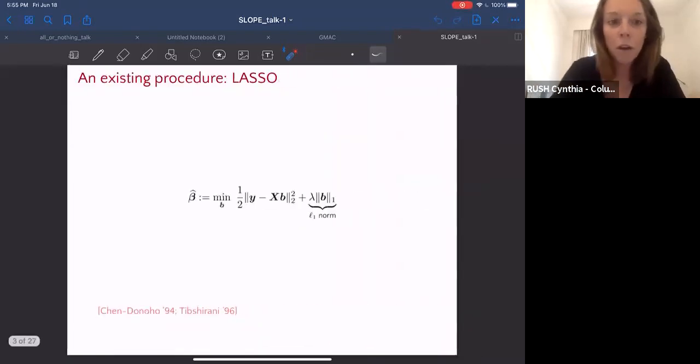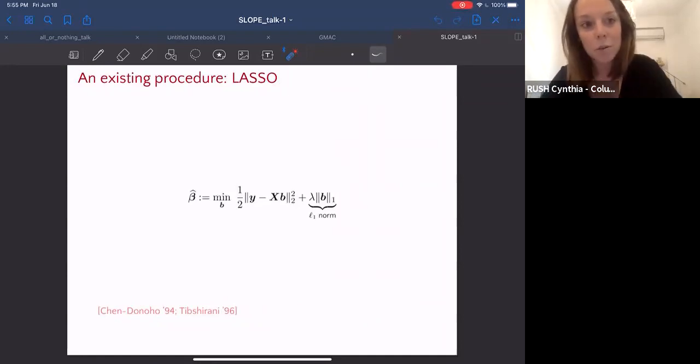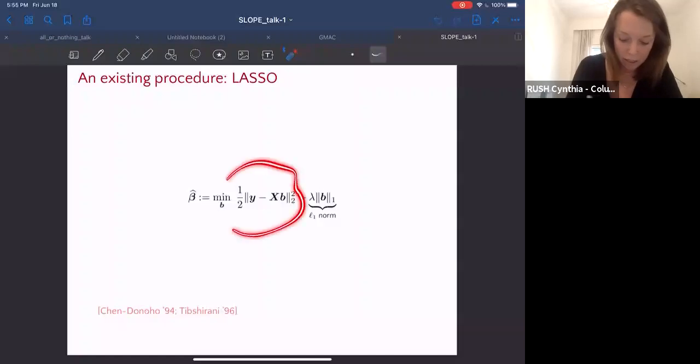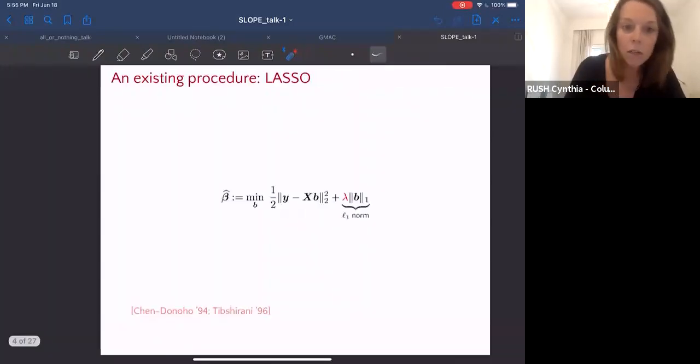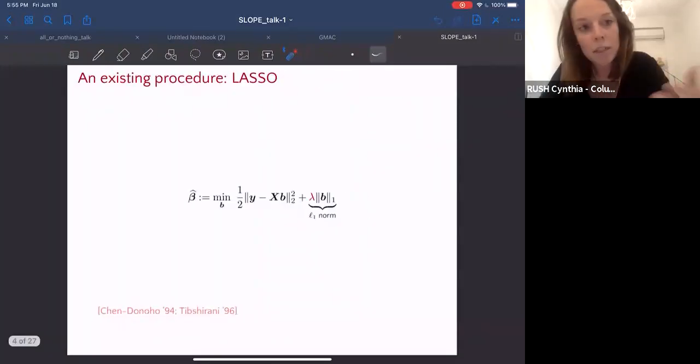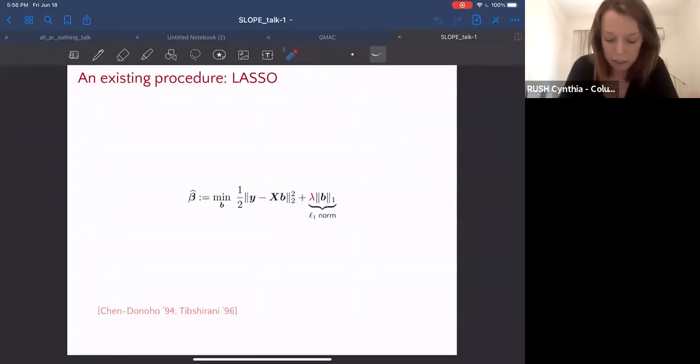For this problem, a well-known and widely used procedure is the lasso. What does the lasso do? It produces an estimate of this coefficient vector beta by minimizing a cost function where the cost is the sum of a data fit term, the sum of the squared errors, plus a penalty term where the penalty is the L1 norm. The penalty term forces a sparse solution, and the level of sparsity is controlled by this parameter lambda. The larger the lambda, the more sparse our solution.